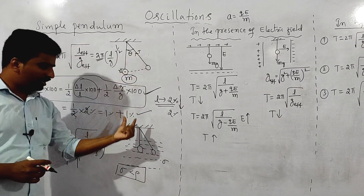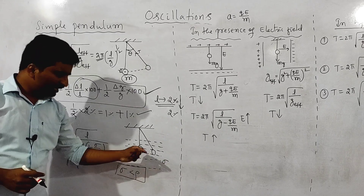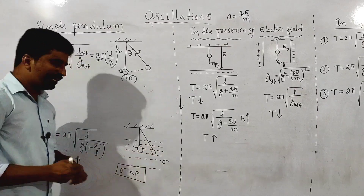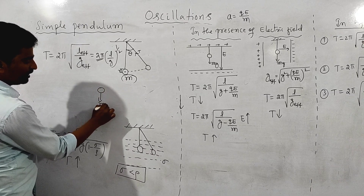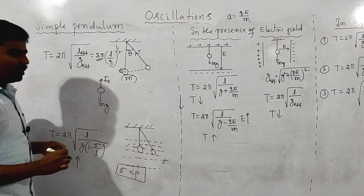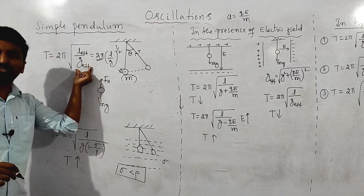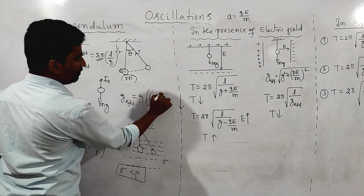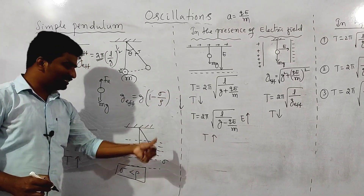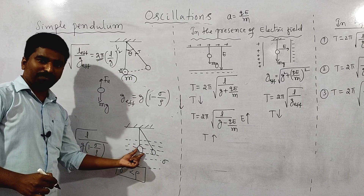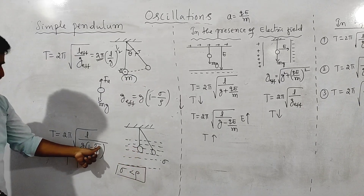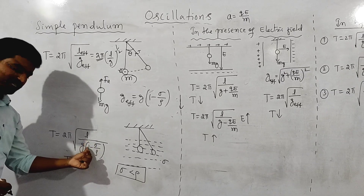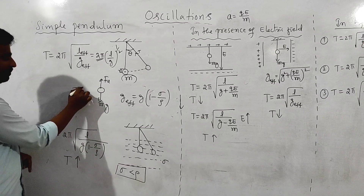Next concept: if a simple pendulum is now placed in a liquid of density sigma, the effective gravity is G_eff = G(1 − σ/ρ), where sigma is the density of the liquid and rho is the density of the pendulum bob. Since sigma is less than rho, the effective G decreases, so the time period increases.